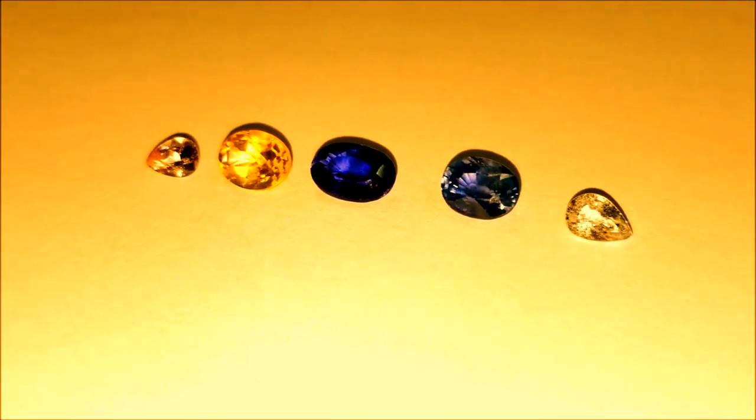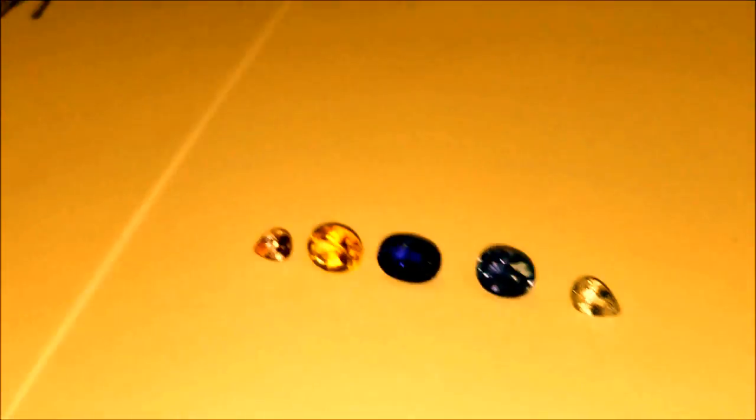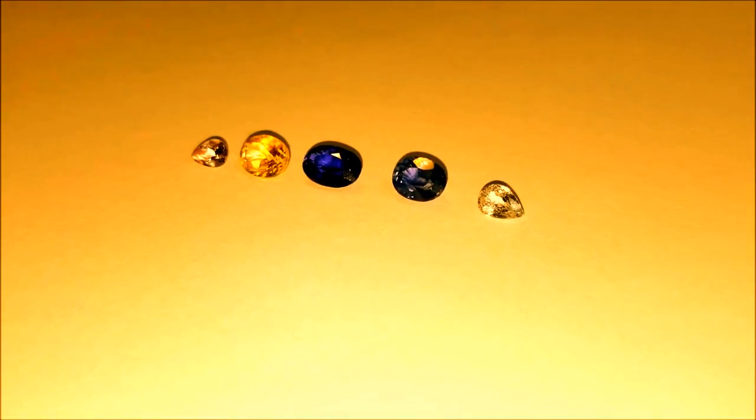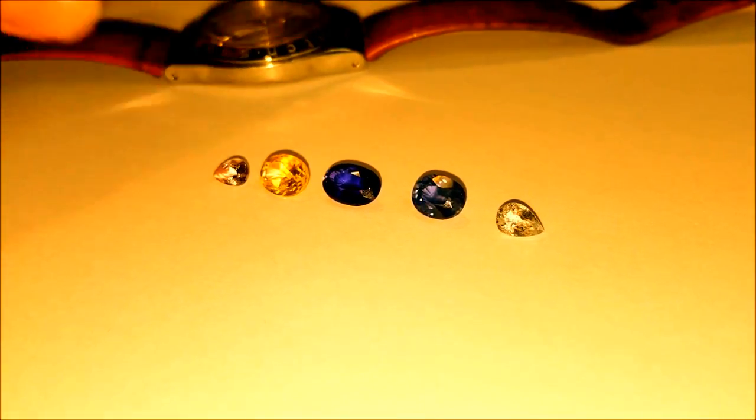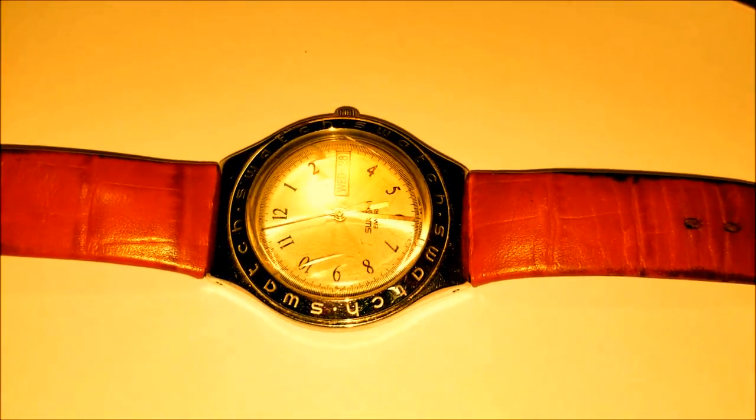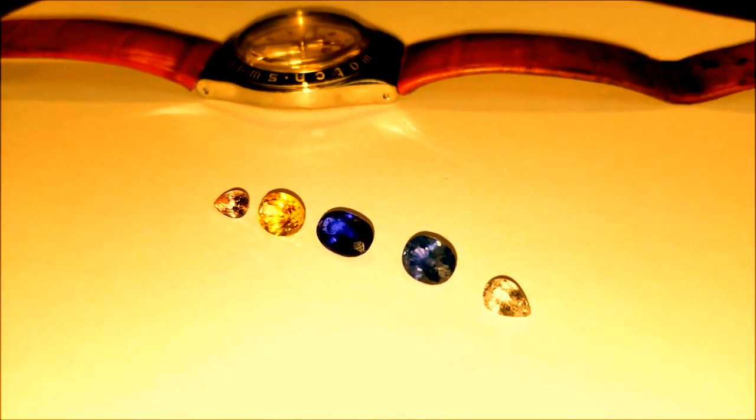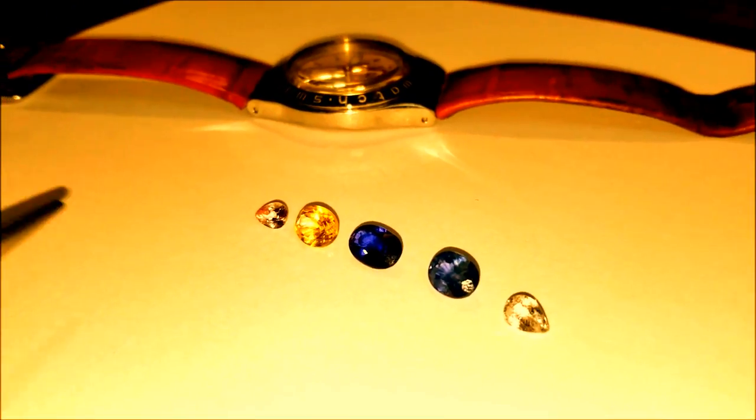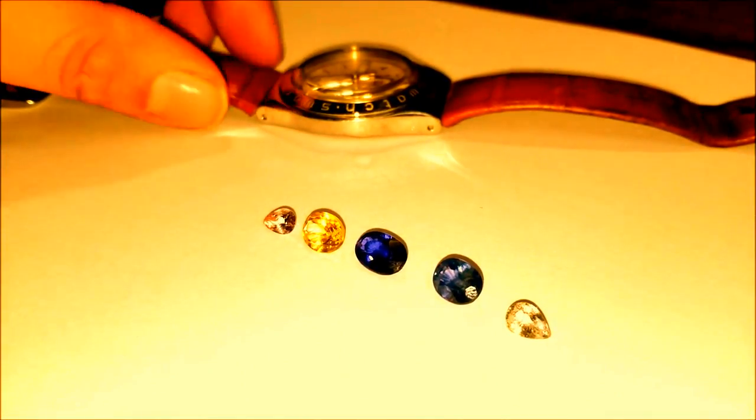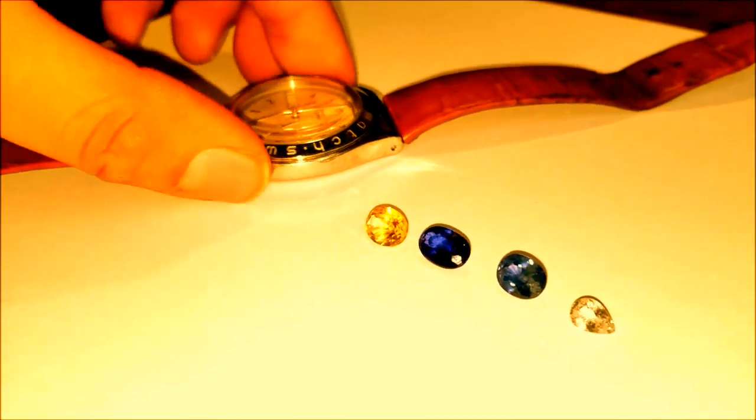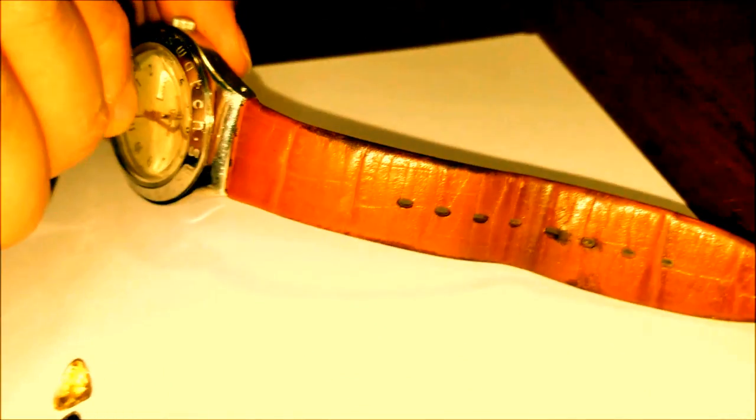Now the first test we're going to be looking at is the scratch test. The scratch test involves scratching another surface that is as hard or harder than natural sapphire, sapphire crystal. Sapphire crystal is aluminum oxide, the same material that sapphire is made out of. In theory, only another sapphire can scratch sapphire. So if we go through and we test these stones out, we should be able to tell whether or not they're natural sapphire, or the same material as sapphire at least.